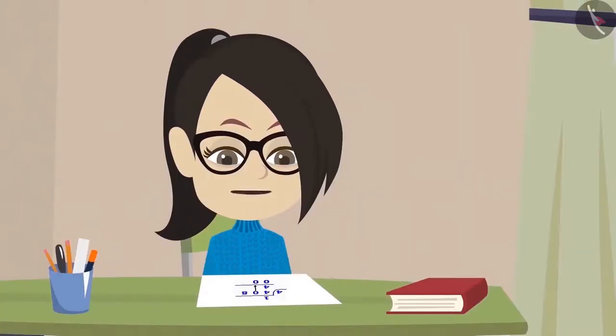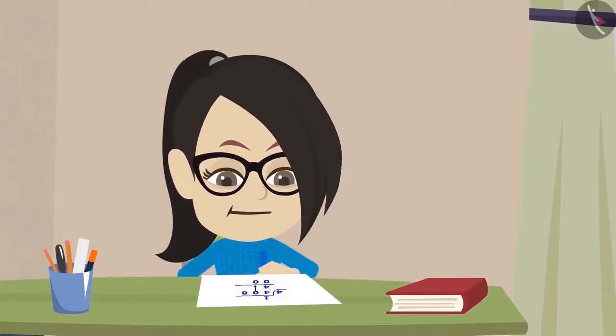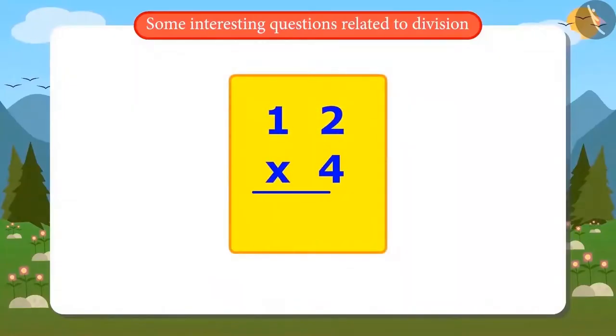Now we must check this and see if the answer is correct or not. I will multiply 4 by 12 to check if this division is correct or not. 4 times 2 is 8 and 4 times 1 is 4. The answer came 48. Oh, what? The answer should have come to 408. That means I have made a mistake in dividing.